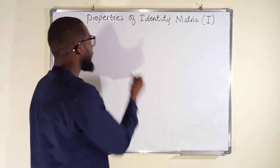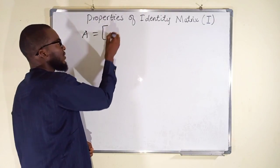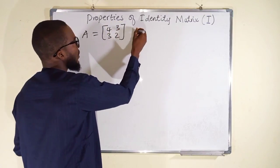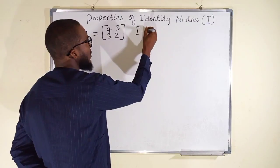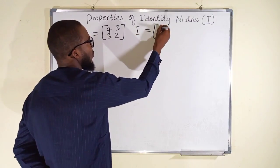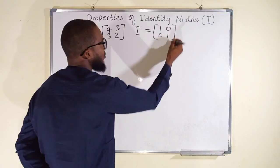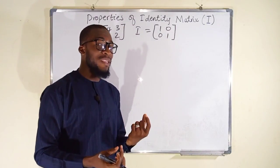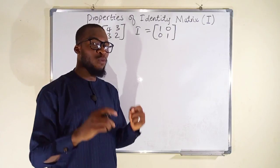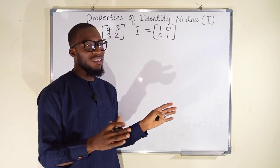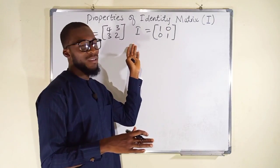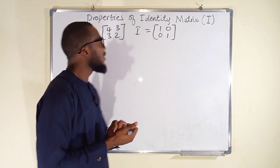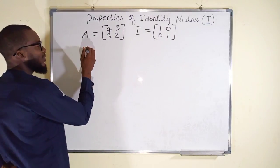Suppose we have matrix A with entries 4, 3, 3, 2, and identity matrix I with entries 1, 0, 0, 1. Just as the number 1 is the identity under multiplication — multiplying any number by 1 does not change it — the same applies in matrices: multiplying a matrix by an identity matrix will not change it. So we want to first test A multiplied by I.